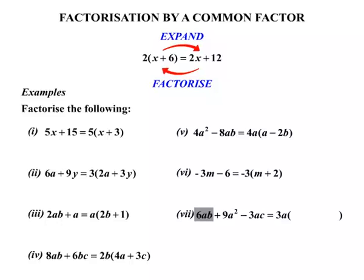So 3a and then the brackets. And one term at a time: to get 6ab we need to go 3a times something. That something would be 2b. 3a times 2b gives 6ab.